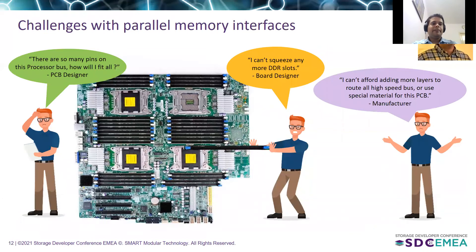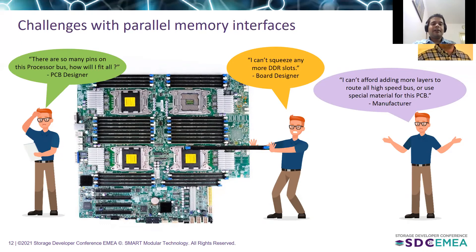Now let's look at the memory side. A major challenge for hardware engineers today is that PCB real estate is saturated with no room to add more DDR DIMM slots next to CPU sockets. It is increasingly difficult to add more pins for CPUs and route parallel interfaces within the board space. Increasing the speed of parallel interfaces requires more PCB layers, exotic materials, and special manufacturing techniques, raising costs. Therefore, there is an industry trend to move to serial attached interfaces using interconnects like CXL, CSX, and OpenCAPI to expand memory beyond DDR DIMMs.